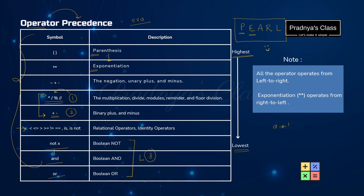If an expression has more than one operator with the same precedence, we follow the concept of associativity — deciding whether operators get evaluated from left to right or right to left. All operators get evaluated from left to right, but there is one exception: the exponentiation operator operates from right to left.